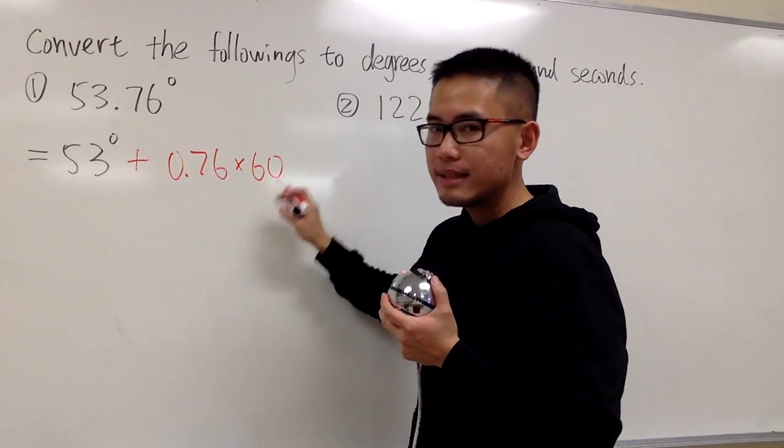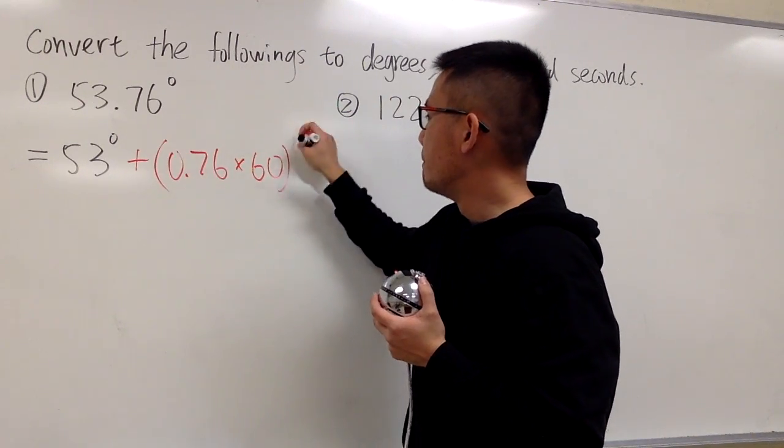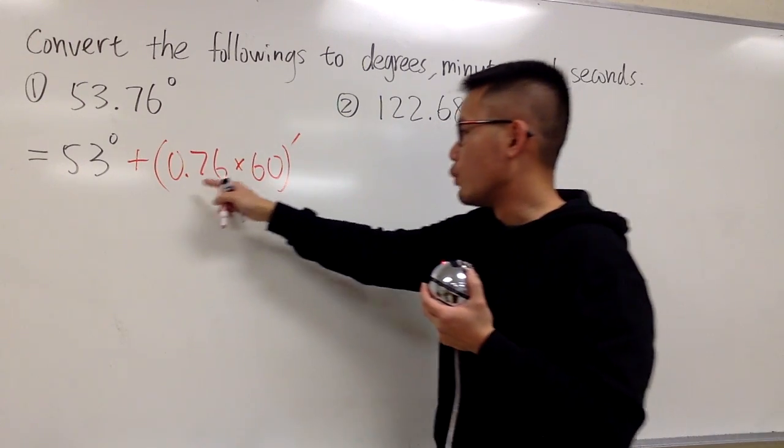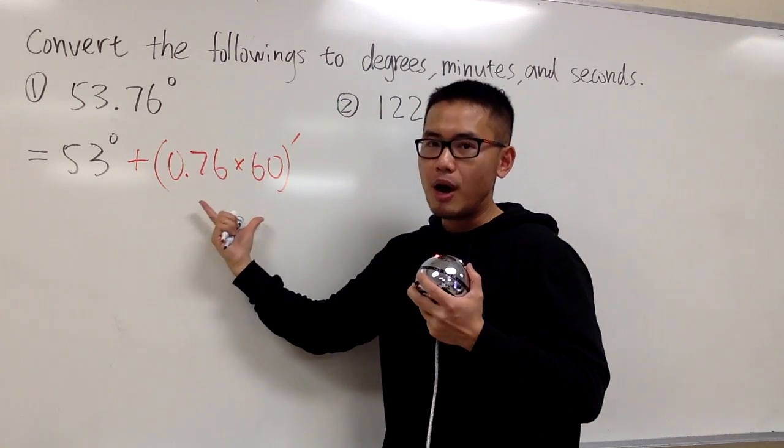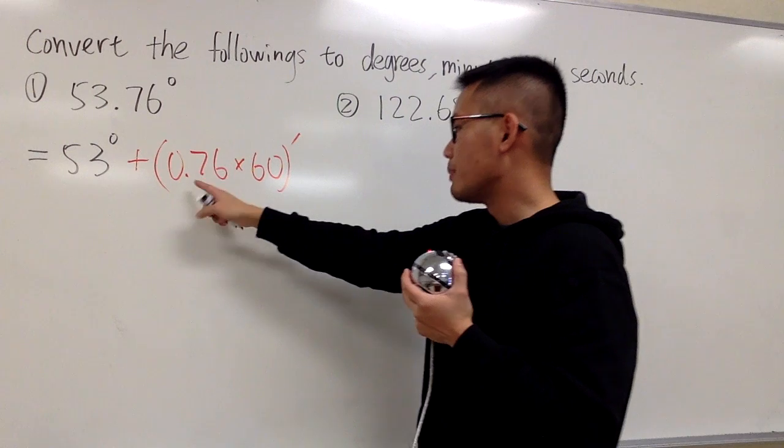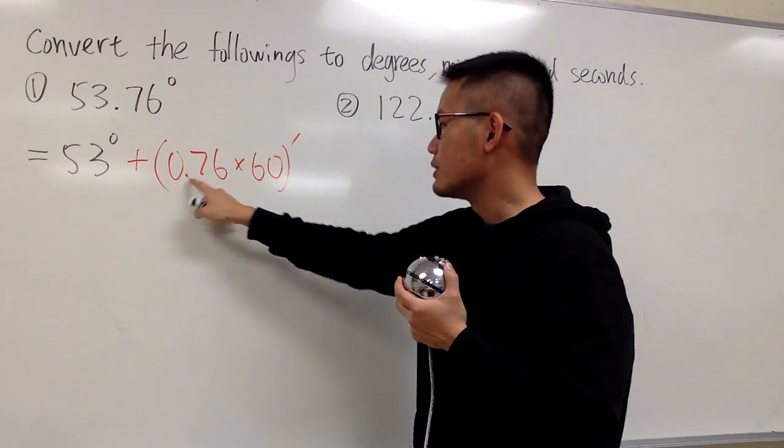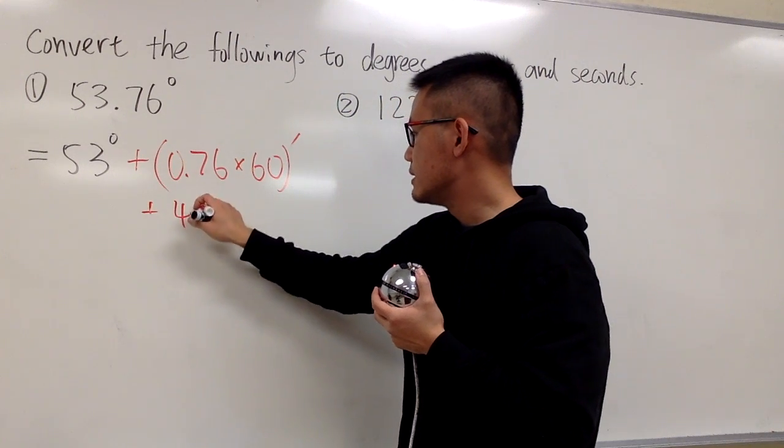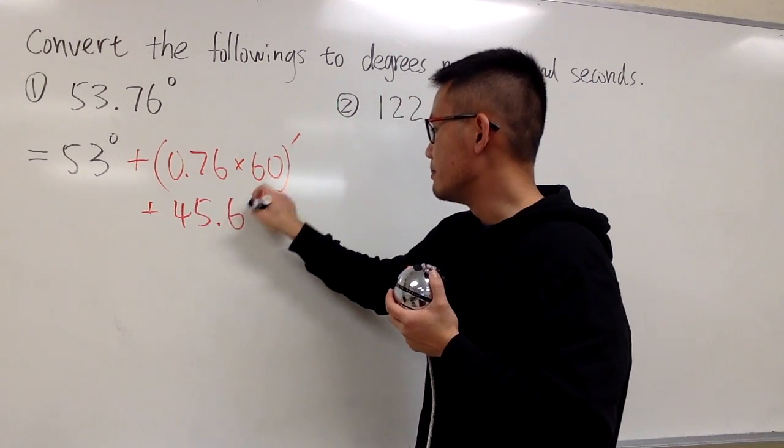And when we do that, we can change this to minutes. You just take your calculator, you multiply it however you want. So 0.76 times 60, you will get plus 45.6 minutes.